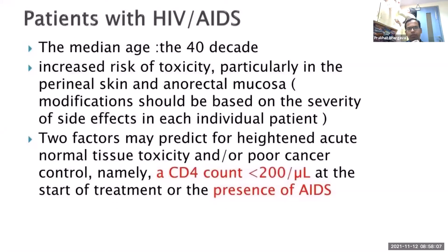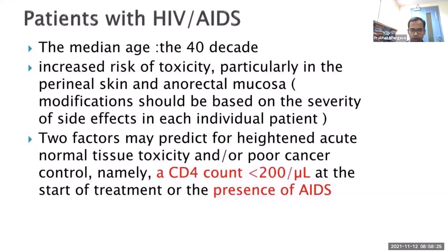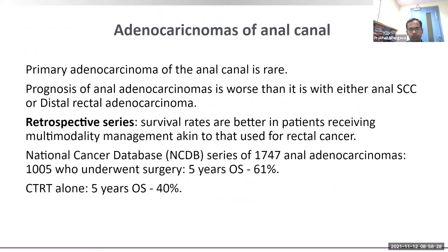In HIV-positive patients, median age is about two decades earlier — around 40 years — compared to 60 years in HIV-negative patients. They have increased risk of toxicity, particularly with perianal skin and anorectal mucosa. Two factors predicting heightened acute normal tissue toxicity are CD4 count less than 200 or any AIDS-defining illness. Primary adenocarcinoma of the anal canal is very rare. Its prognosis is worse than either squamous cell anal cancer or distal rectal carcinoma.